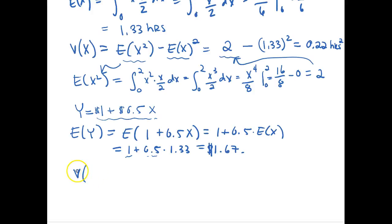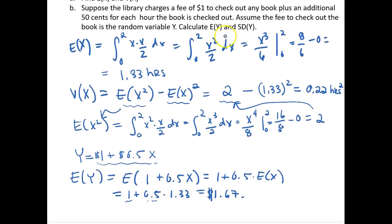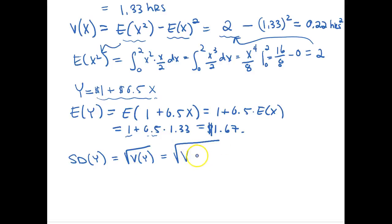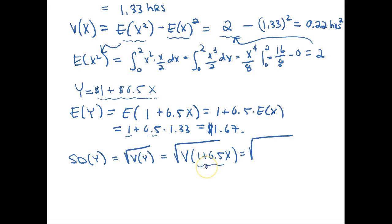Now what is the standard deviation of y? The standard deviation is always the square root of the variance. From the rules of linear combinations, the variance of y equals the variance of 1 + 0.5x. The constant 1 drops out because adding a constant to all values of a random variable does not change its variation, but the 0.5 multiplier does matter.